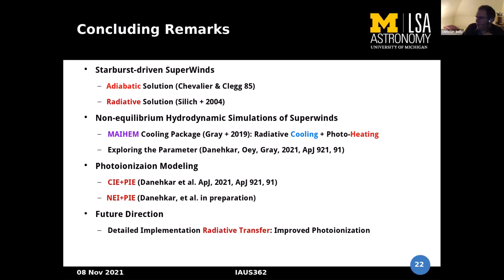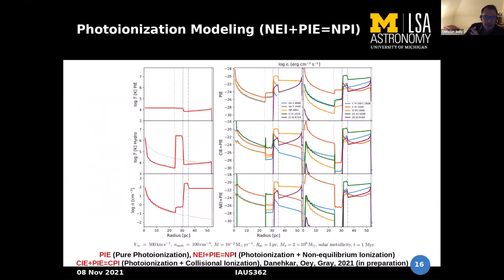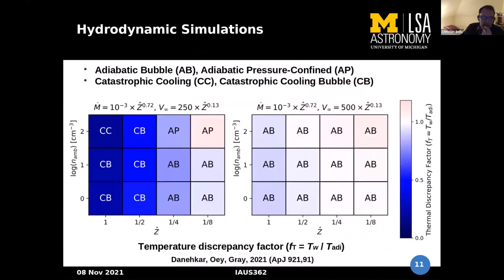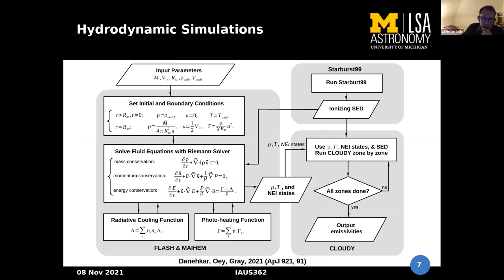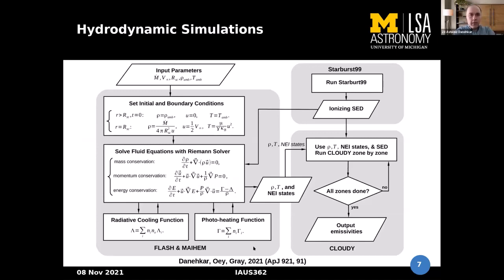A question was raised about the FLASH code setup—specifically whether spherical coordinates are used and how the cooling function is implemented. The simulation uses spherical coordinates. The code is a modified version of FLASH called MAYHEM, because standard FLASH does not include a radiative cooling or photo-heating function. The co-author incorporated the radiative cooling and photo-heating functions into FLASH to create MAYHEM.